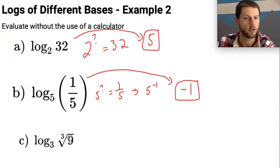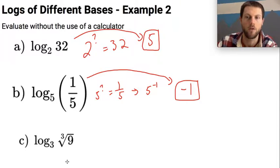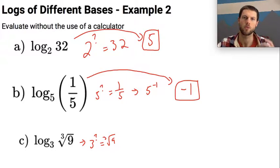And then here's a little bit of a doozy. I've got log base 3 of the cube root of 9. What's that going to equal? Well, let's think about this in exponential form. 3 to the what power equals the cube root of 9. And still, it doesn't seem like it really is jumping out at me.